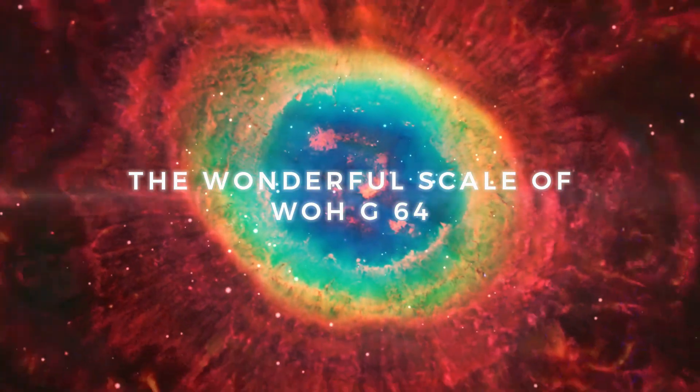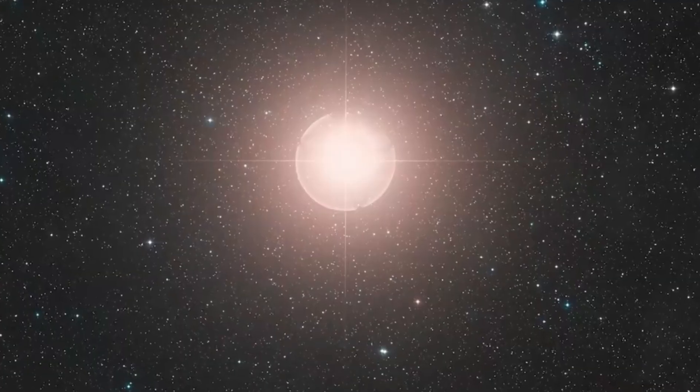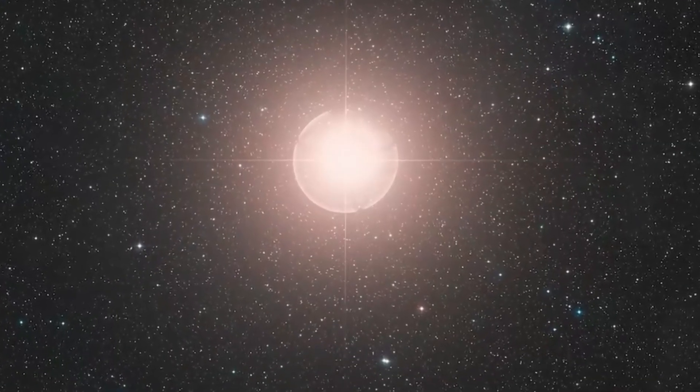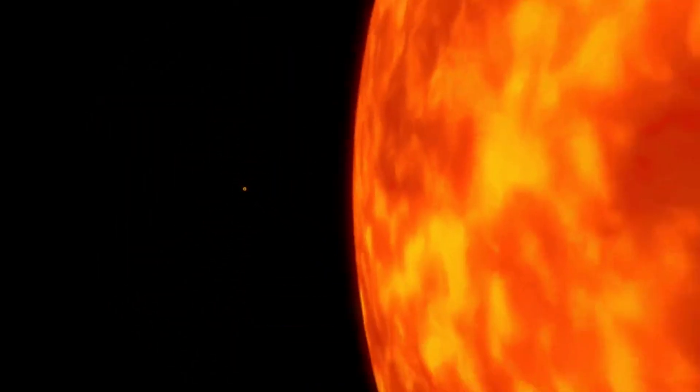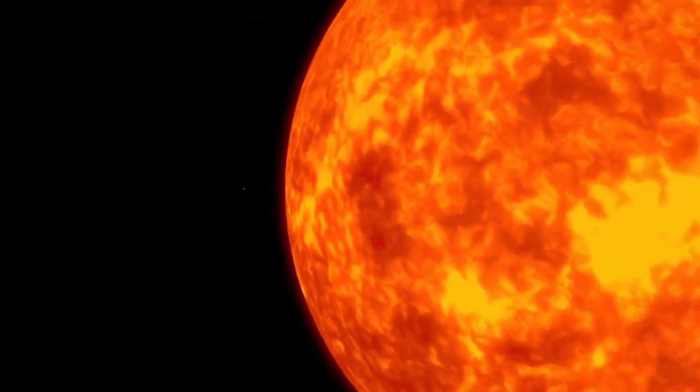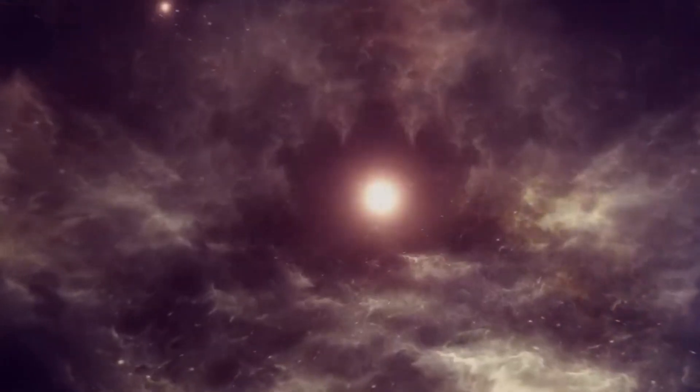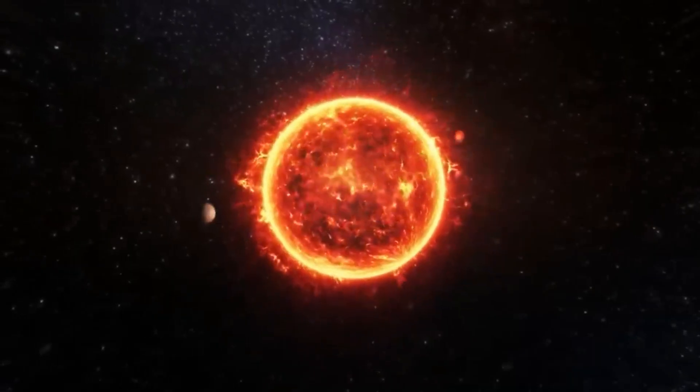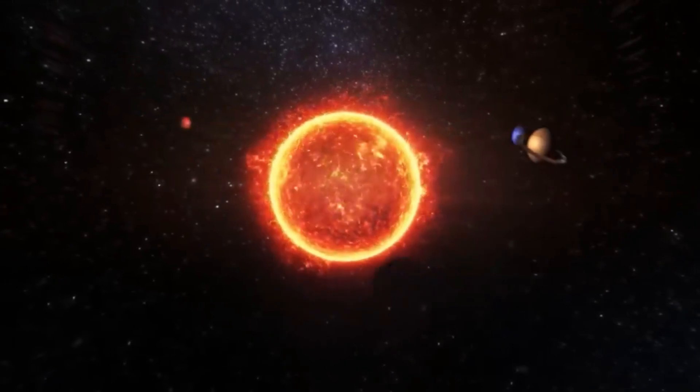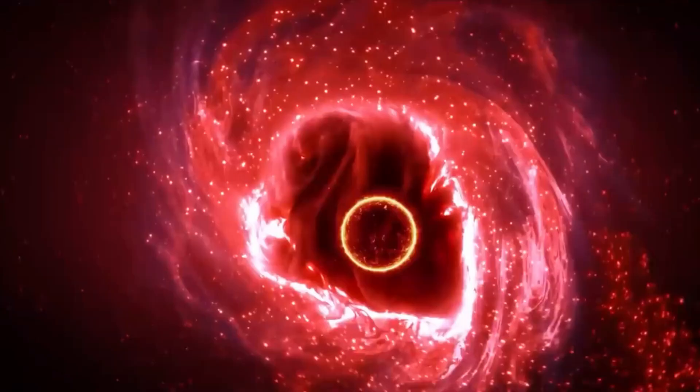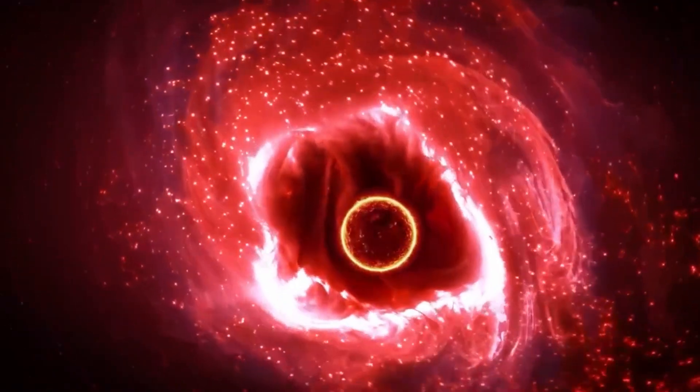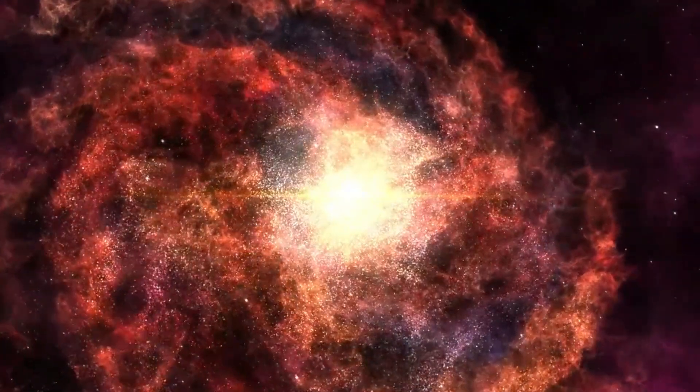The Wonderful Scale of WOG64. WOG64 is the biggest star we know of. Its diameter is thought to be about 2,000 times that of the sun. To give you an idea of how big this thing is, WOG64 would go beyond Jupiter and Saturn's orbit if it were put in the middle of our solar system. Its enormous size shows how grand and seemingly endless the world is.